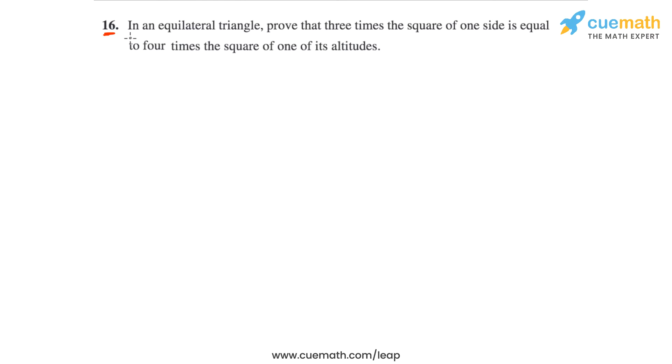Question 16 of this exercise says, in an equilateral triangle, prove that 3 times the square of one side is equal to 4 times the square of one of its altitudes.